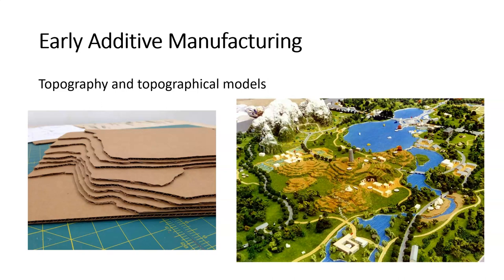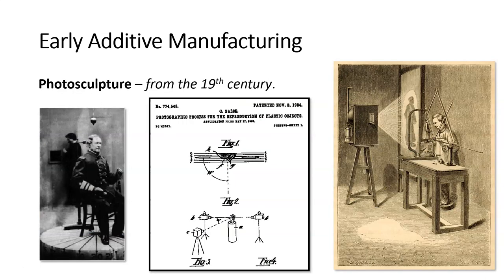Other early additive manufacturing — they didn't call it that at the time — can be seen in topographical models: dioramas or structures that resemble the earth, mountains, and landscape forms. Back in the 19th century, the 1800s, there was a method called photosculpture, which used a series of light sources to reproduce three-dimensional shapes. The object would rotate to create this sculpturing process.